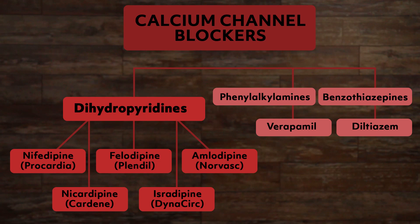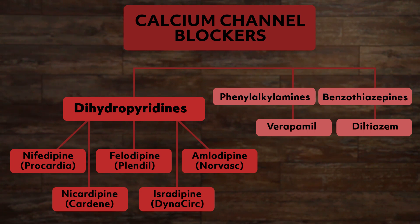There are three classes of calcium channel blockers: dihydropyridines, phenylalkylamines, and benzothiazepines. The last two are considered non-dihydropyridines.